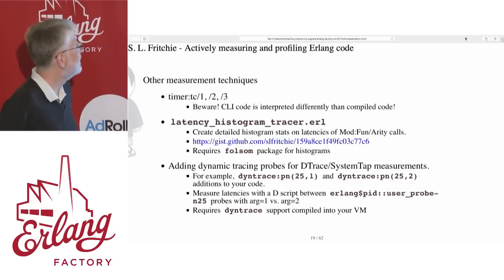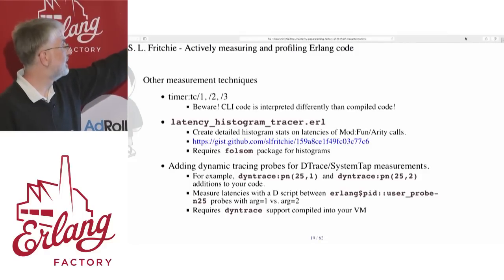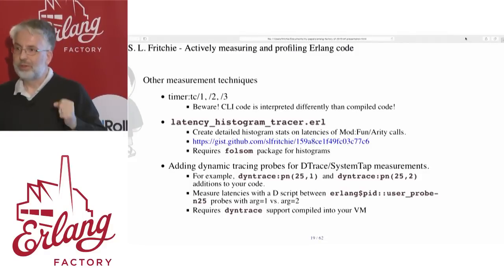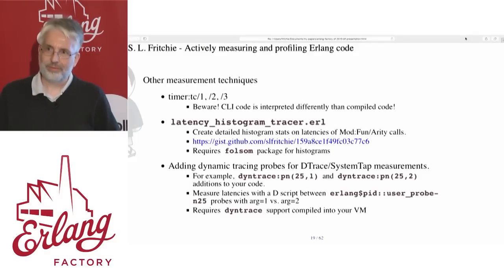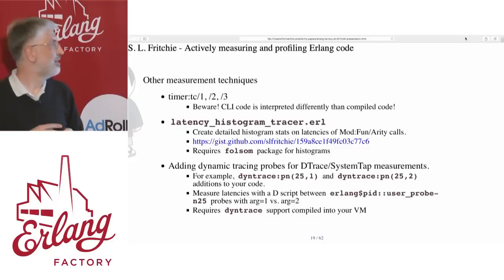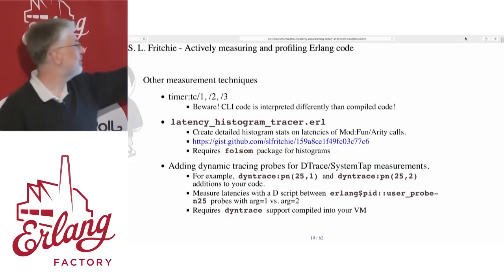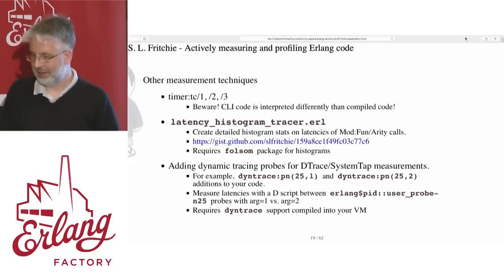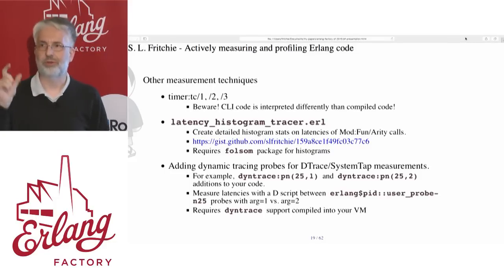There are other measurement techniques. On the command line or in compiled code you can use the timer:tc function. Please be aware that code executed as you type on the CLI is interpreted and has different timing characteristics than if it's compiled. I'll talk a little bit about the latency histogram tracer, which is quite useful for executing a function a bunch of times and then getting detailed statistics about the latency of each one of those calls.